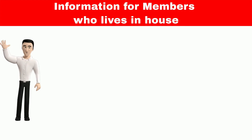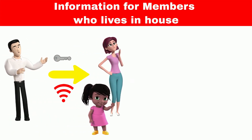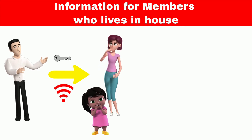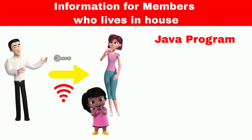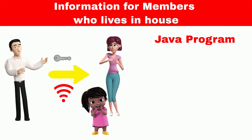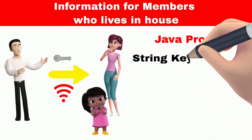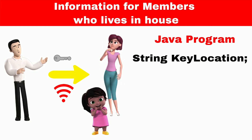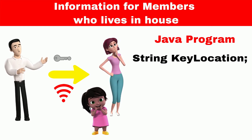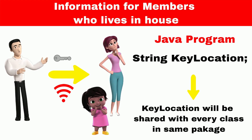Coming back to Ross, some information Ross only shares with the members of his house, like where the backup key of the house is kept and the password of the Wi-Fi. Similarly, in a Java program, information that we want to share with every other class within the same package will be declared as default. If we don't use any access specifier, then it will be considered as default. For example, the string variable keyLocation will be shared with every other class in the same package.